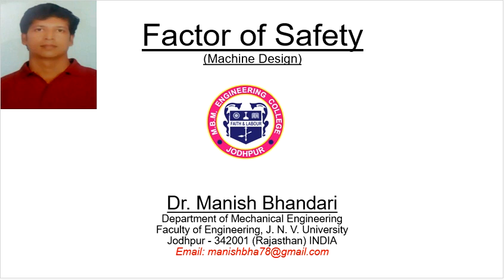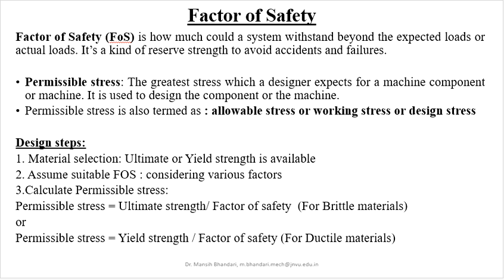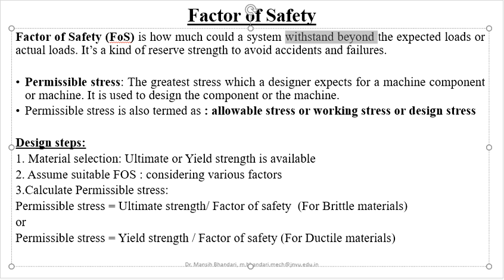Factor of safety is a very important term when we discuss the subject machine design. It refers to how much a system can withstand beyond the expected or actual loads. For example, if we design a 52-seater bus, we actually have to design it for 60 or 70 passengers, because the bus might be overloaded in practical conditions. It is a kind of reserve strength to avoid accidents and failures.